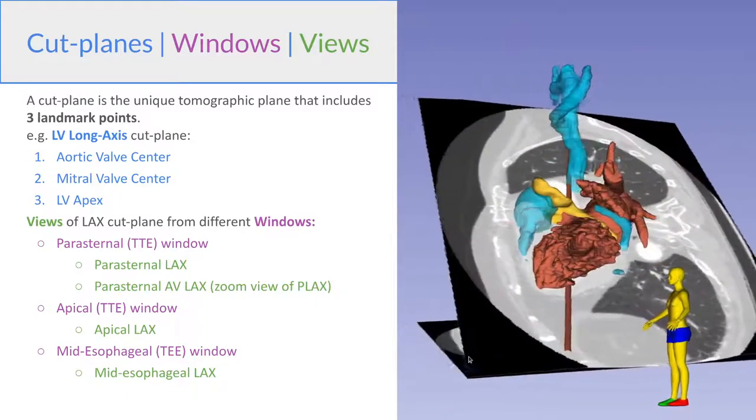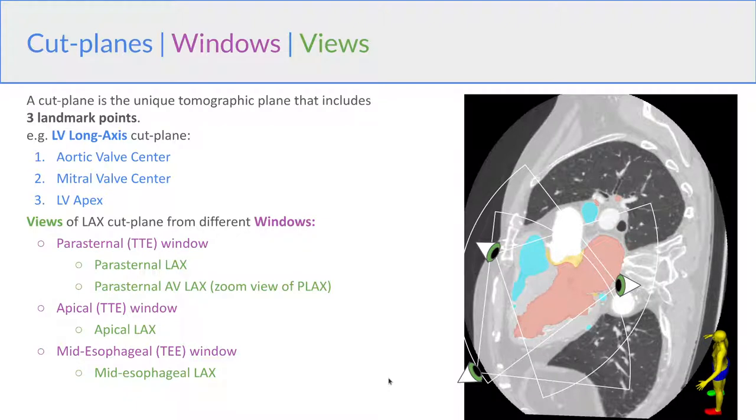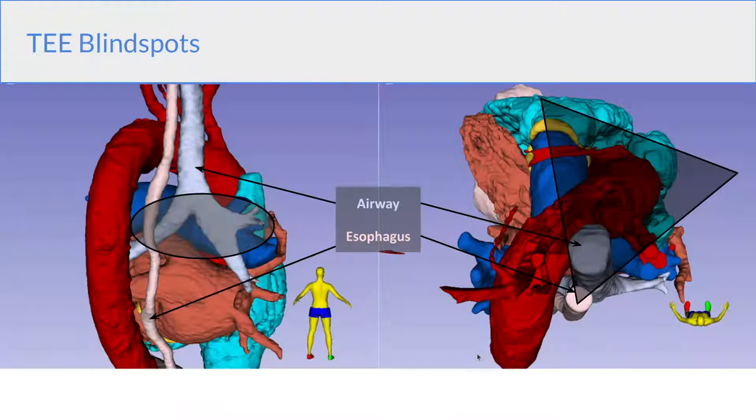For the long axis cut plane, we can view it from the parasternal window, the apical window, or the mid-esophageal window. As you remember, we have some limitations with TEE in terms of what we can see, mainly because of the interposition of the airway between the esophagus, where the probe sits, and the cardiac structures. So we have two broad blind spots. One is between the mid-esophageal and upper esophageal windows caused by the carina and the main stem bronchi. And the other one is at the top, caused by the upper trachea, and it obstructs our view of the distal ascending aorta and the proximal aortic arch.